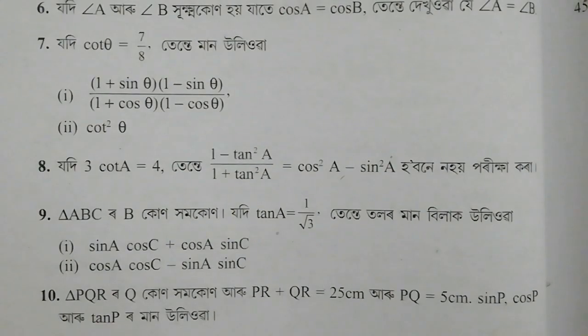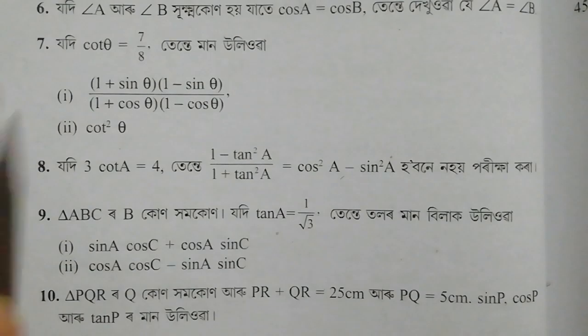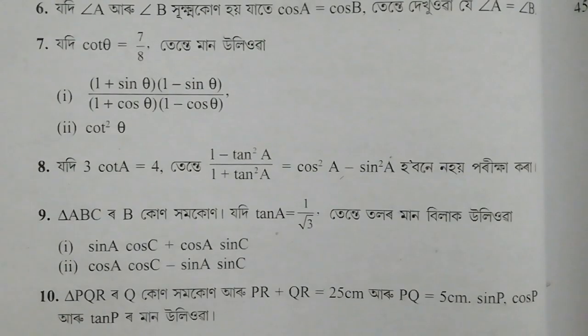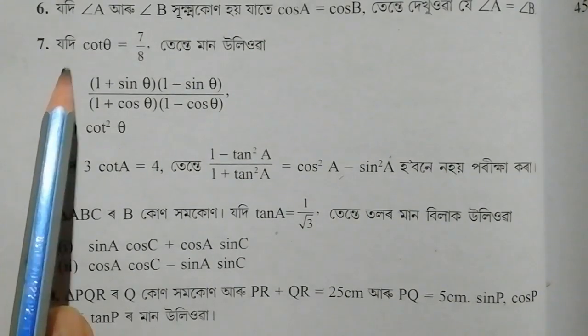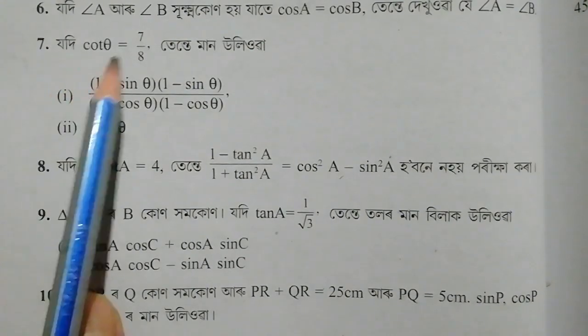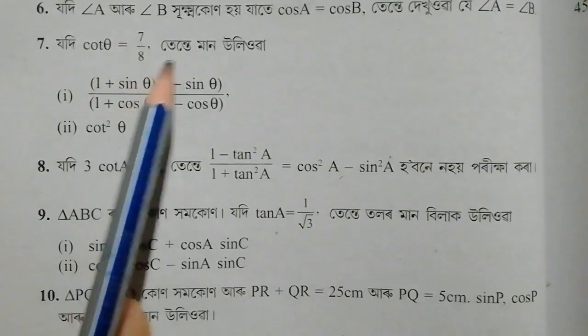Hello students, welcome to my class. This is exercise 8.1, question number 7 and 8. Question number 7: given that cot theta equals 7 by 8,